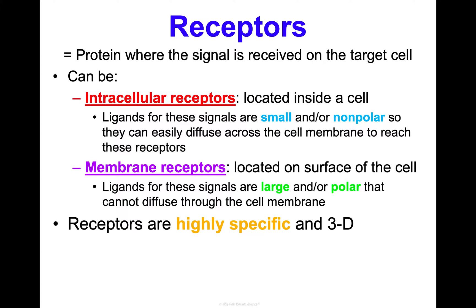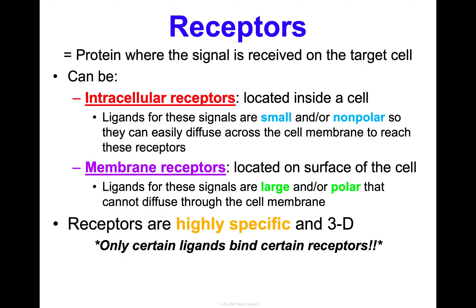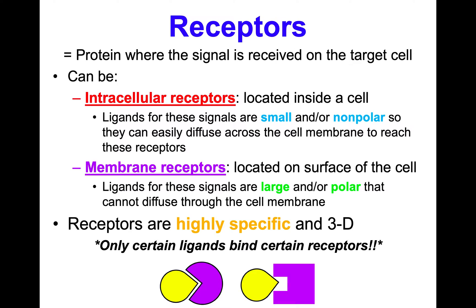Receptors are highly specific. Proteins have four levels of structure — primary, secondary, tertiary, and quaternary — and receptors are also three-dimensional. So only certain ligands can bind certain receptors; this is a highly specific and regulated process. If this is a ligand and this is a receptor, these would bind perfectly. This other ligand would not bind to this receptor because they are not specific and don't go together.